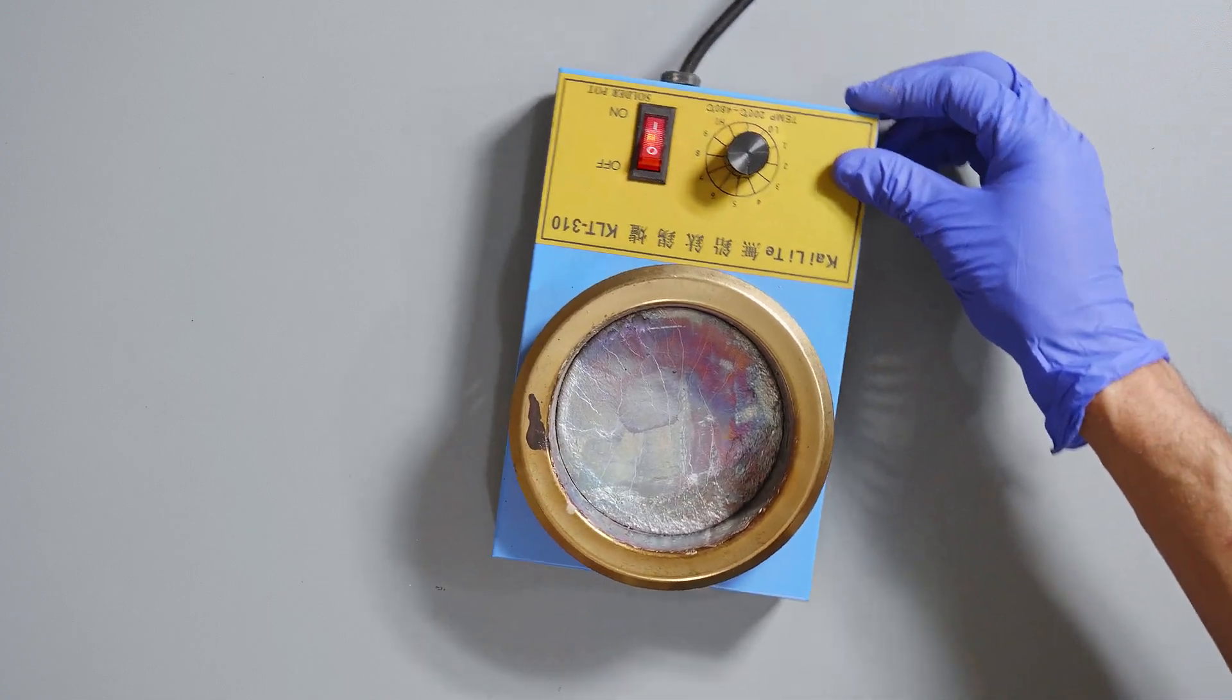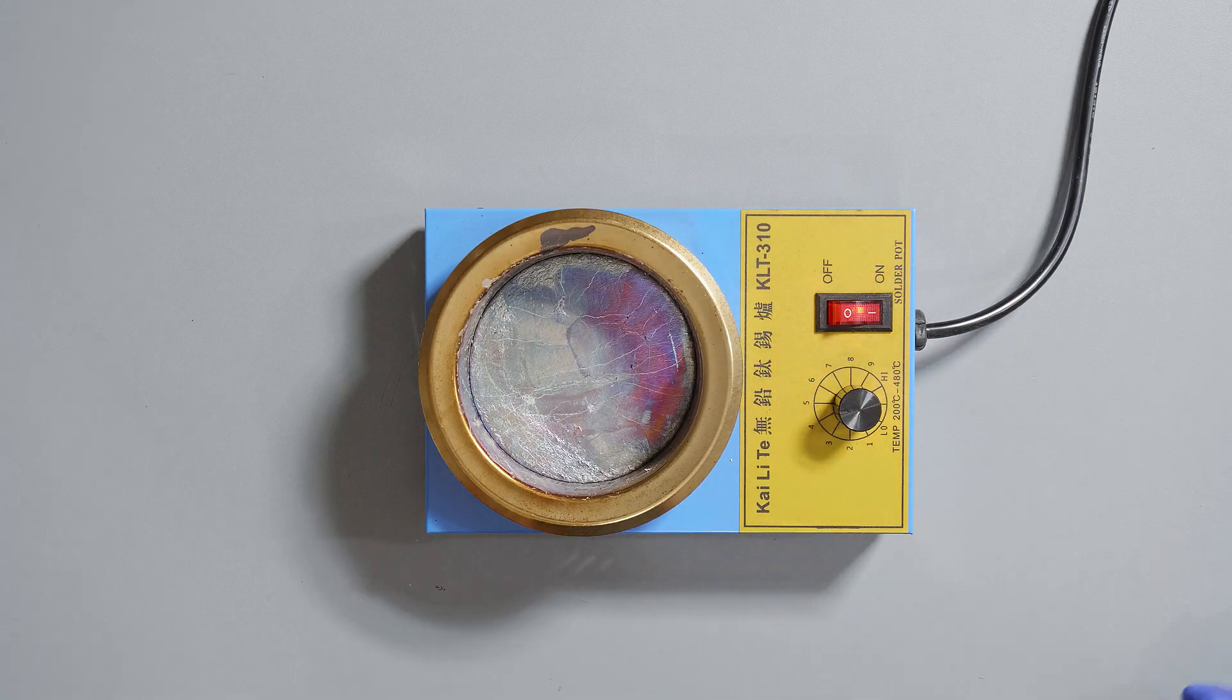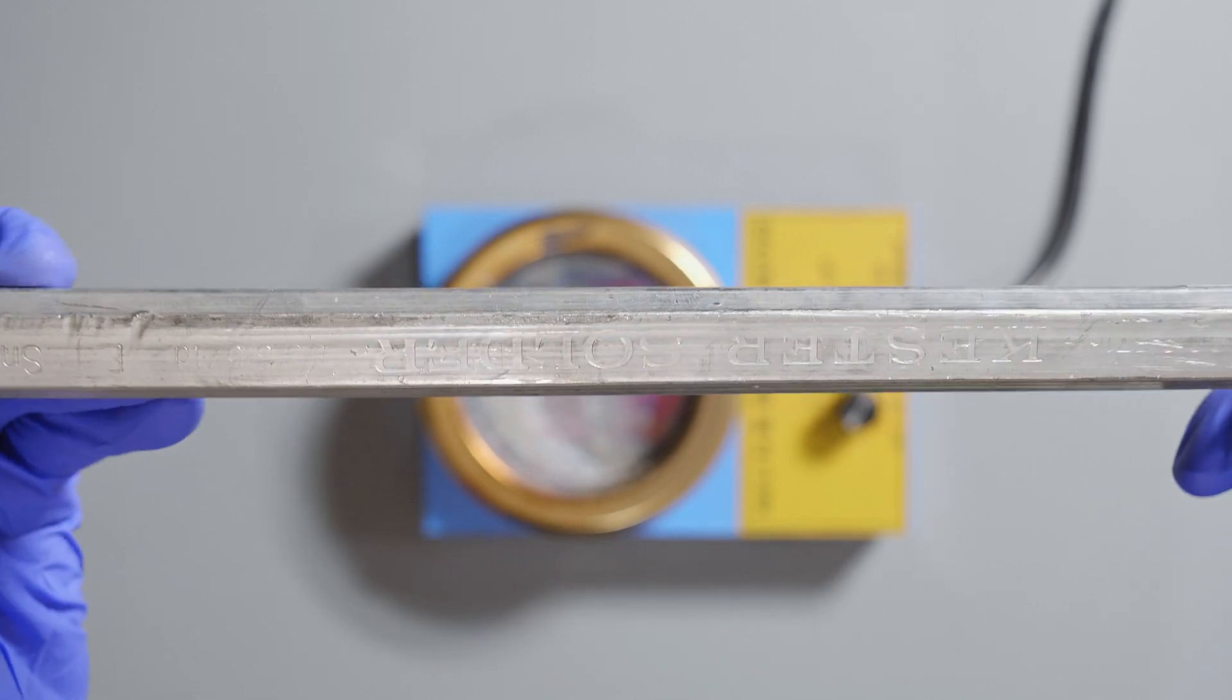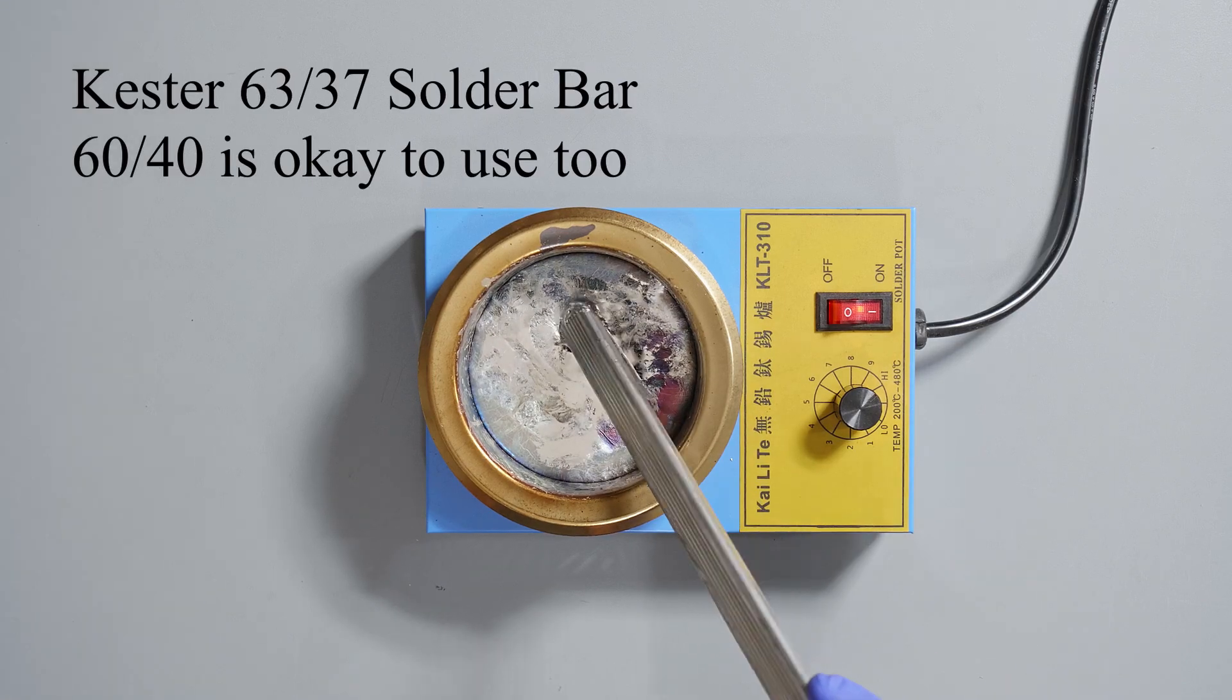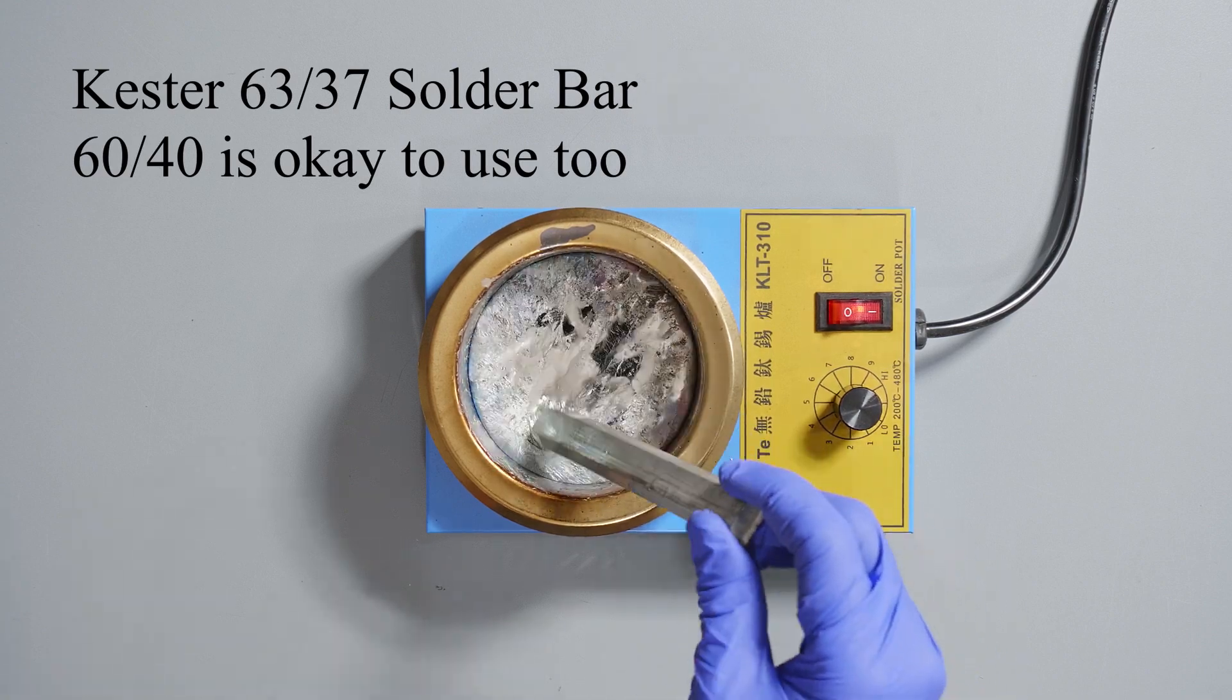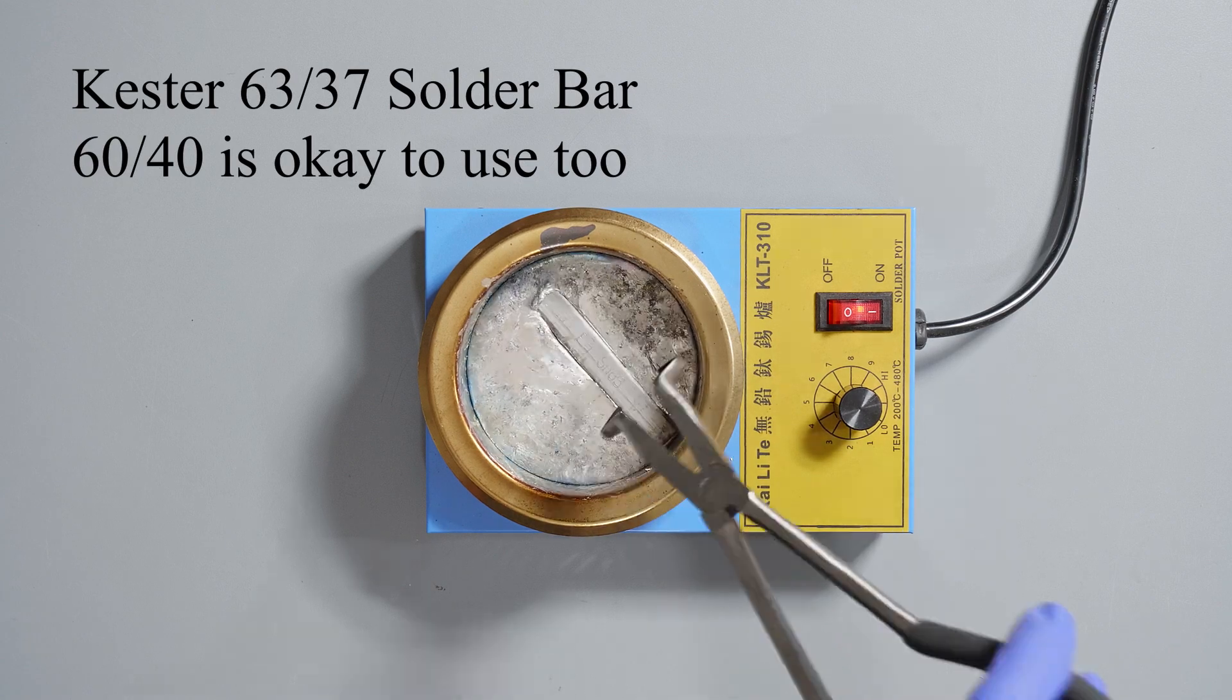Now we have our solder - it's nice and hot. If you need to add more solder, I recommend eutectic solder which is 63/37. So that's 63% lead, 37% tin. Just go ahead and melt it into your solder pot there, and once it's all melted in, we'll start to scrape off that top layer.